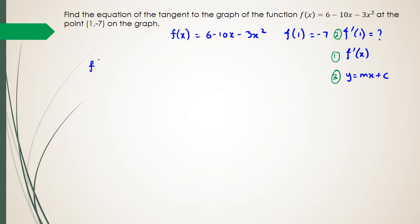So, the first step I'm going to do is differentiate the function. So, when I differentiate 6, I'm going to get 0. Differentiate negative 10x, I've got negative 10. And then, negative 3x squared will differentiate to negative 6x.